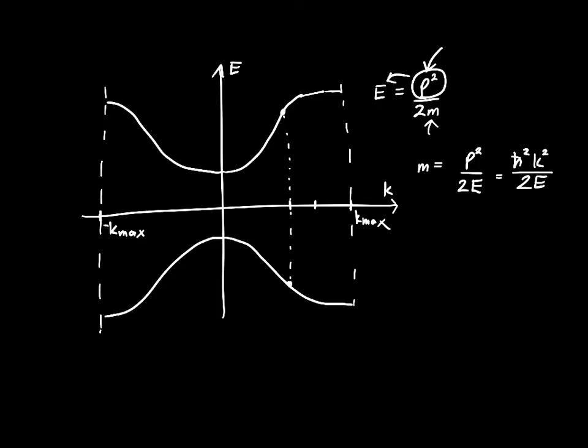If we choose a value of K that's here, maybe this is a K of 3 and the energy is a value of 2, then we calculate the mass. It's equal to h-bar squared times 3 squared, which is 9, divided by 2 times E, which is 2 times 2. So it's h-bar squared times 9 fourths.